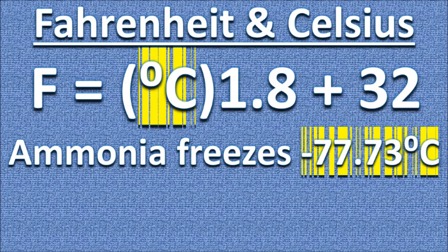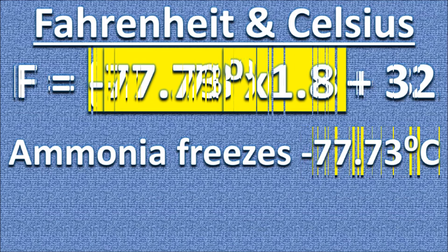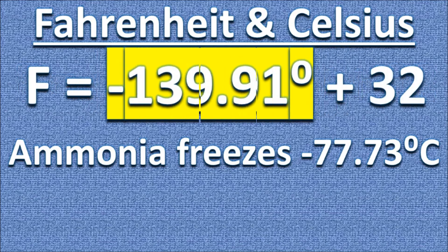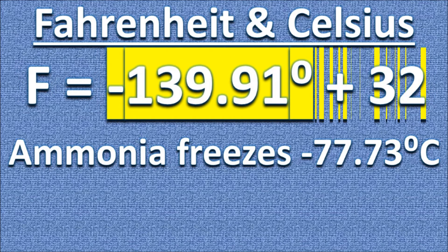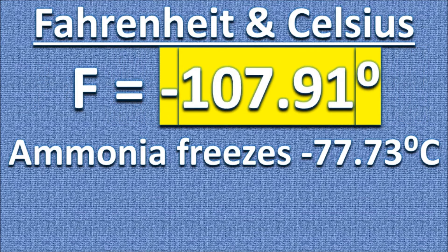We plug negative 77.73 into our formula. Next, we multiply negative 77.73 into 1.8. Last, we add 32, which gives us negative 107.91.